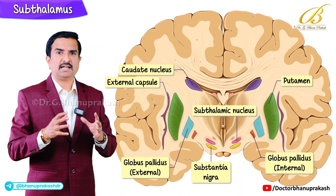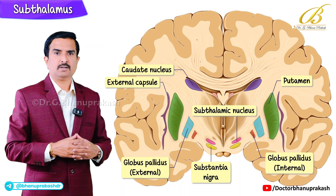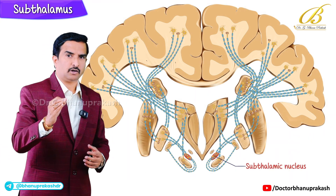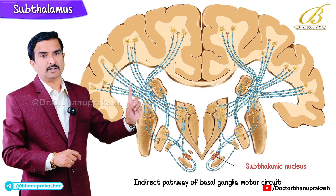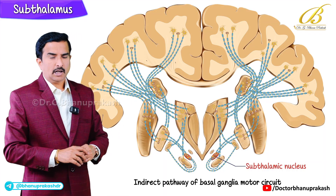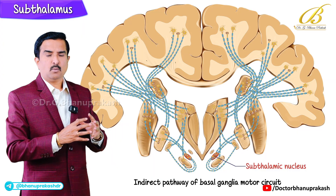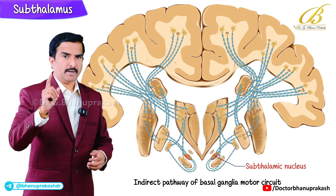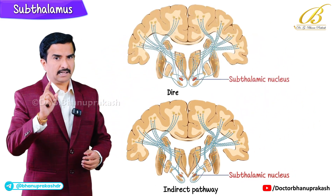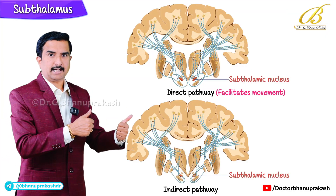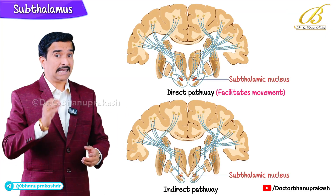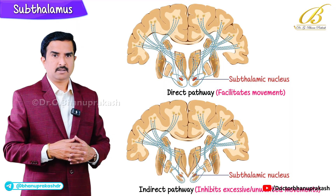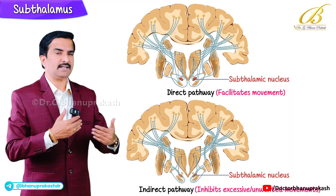So what does the subthalamic nucleus do? The subthalamic nucleus is part of the indirect pathway of the basal ganglia motor circuit. The basal ganglia controls movement through two major pathways: the direct pathway, which facilitates movement, and the indirect pathway, which inhibits excessive or unwanted movements so that smooth movements can be coordinated.